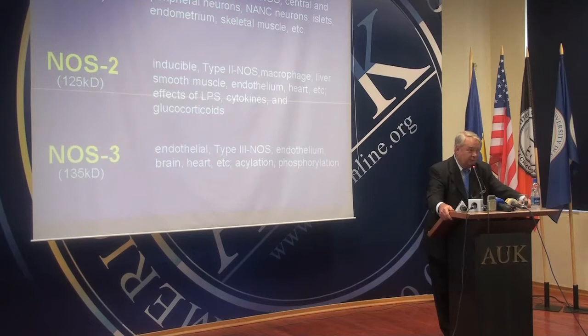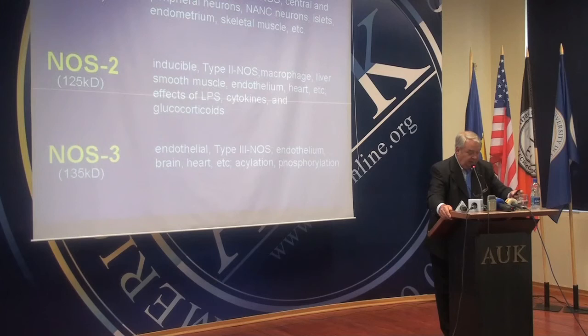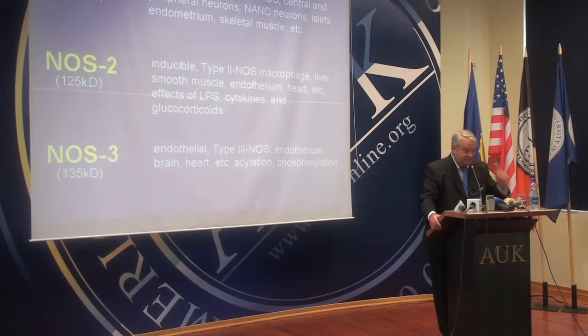Whether it's atherosclerosis, Parkinson's, Alzheimer's, myocarditis, colitis, nephritis, or arthritis — it doesn't matter. The pathways are the same. NOS-3 is also found in a wide number of tissues. It's found in the pancreas and the islets, and probably participates in insulin secretion, as does NOS-1. It turned out that these enzymes were popping up all over the place to make nitric oxide.